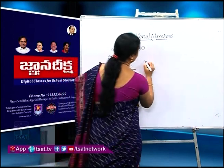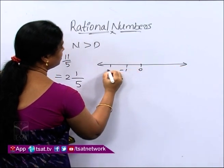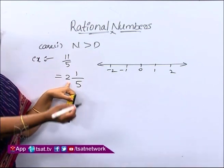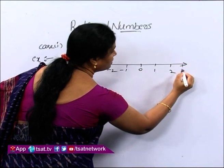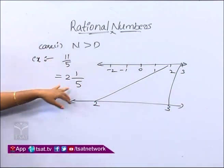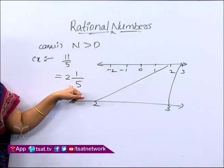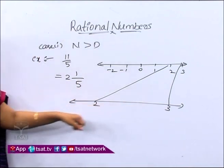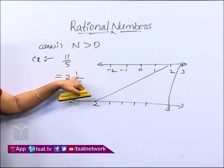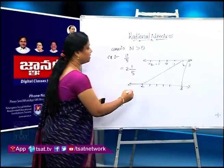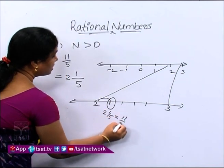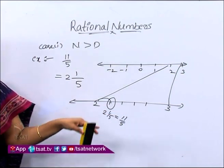Now we go with the example on the number line: 0, minus 1, minus 2, 1, 2. The whole part is 2, so 11/5 lies between 2 and the next whole number, which is 3. We divide the segment between 2 and 3 into 5 equal parts: 1, 2, 3, 4, 5. The numerator is 1, so we move 1 step forward. This gives us 2 and 1/5, which is the actual location of 2 and 1/5 — that is 11/5. This is the representation of rational numbers on the number line.